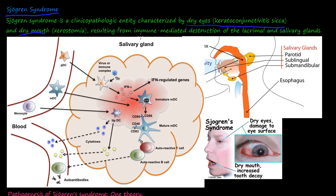Xerostomia — 'xero' means dry. This condition results from immune-mediated destruction of both the lacrimal glands and the salivary glands. The lacrimal gland is located in the superior lateral portion of the eye. The major salivary glands are the parotid gland in the cheek, the sublingual gland under the tongue, and there are also minor glands on the tongue.